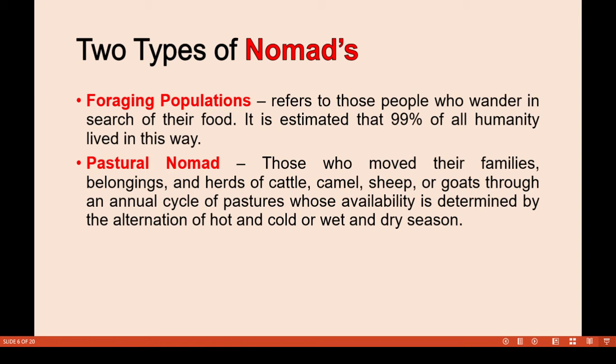There are two types of nomads. The first is foraging populations — people who wander in search of food. It is estimated that 99% of all humanity lived this way in ancient times. The second is pastoral nomads — those who move their families, belongings, and herds of cattle, camel, sheep, or goats through an annual cycle of pasture.